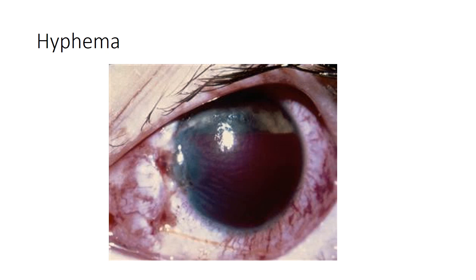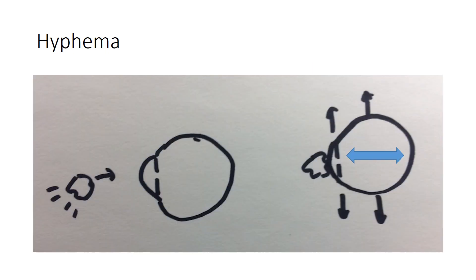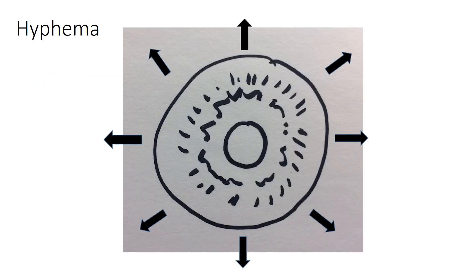Hyphema is another red eye problem of the anterior chamber, and blunt trauma is frequently the cause. When a pebble hits the cornea, it compresses the eye in the anterior-posterior direction. At the same time the eye expands radially in the opposite direction. Viewed face-on, the forces stretch the eye radially from the limbus.